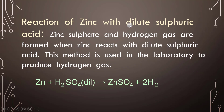Reaction of zinc with dilute sulfuric acid: zinc sulfate and hydrogen gas are formed when zinc reacts with dilute sulfuric acid. So whenever we create a reaction between a metal and an acid, it converts into the respective metal salt and hydrogen gas. Here we get zinc sulfate and hydrogen gas.